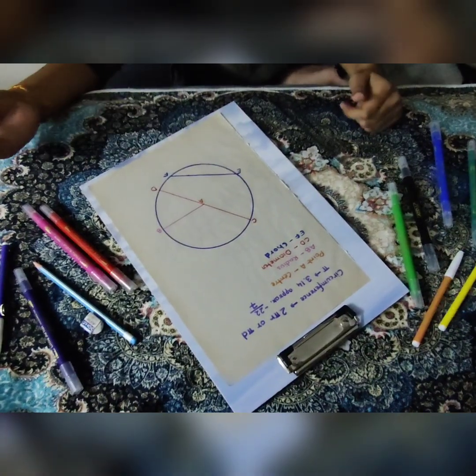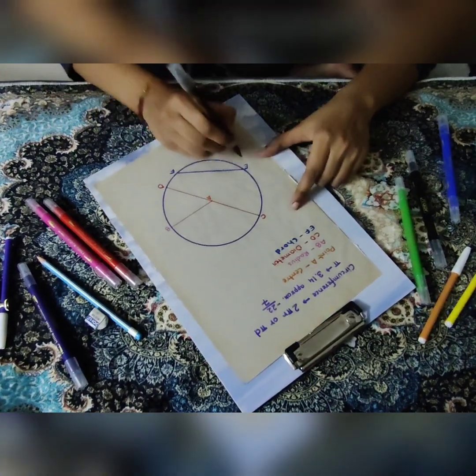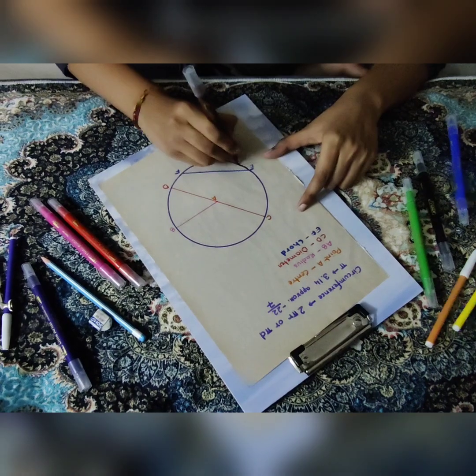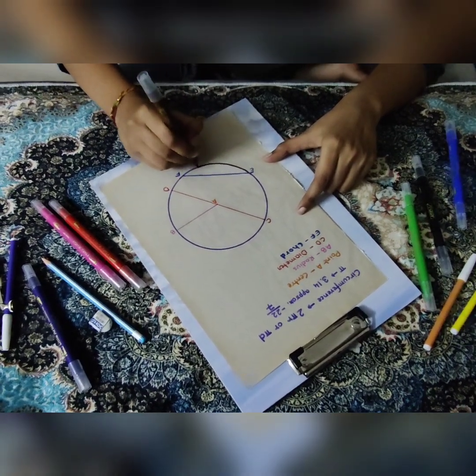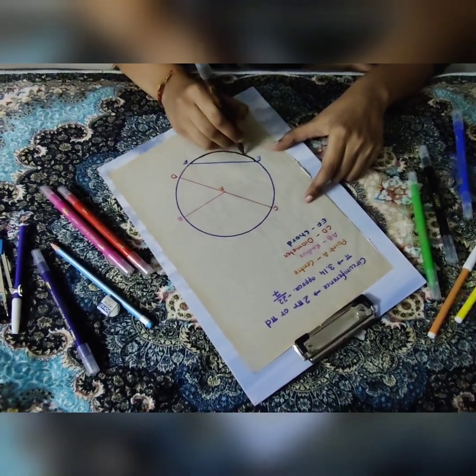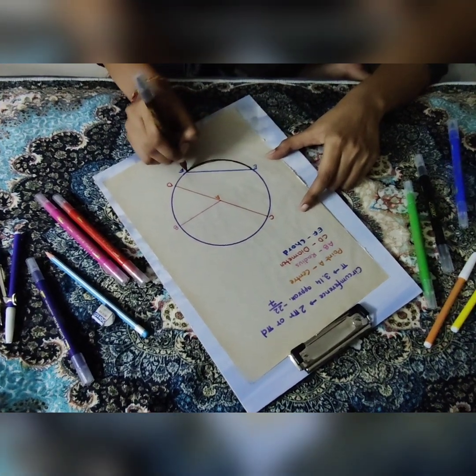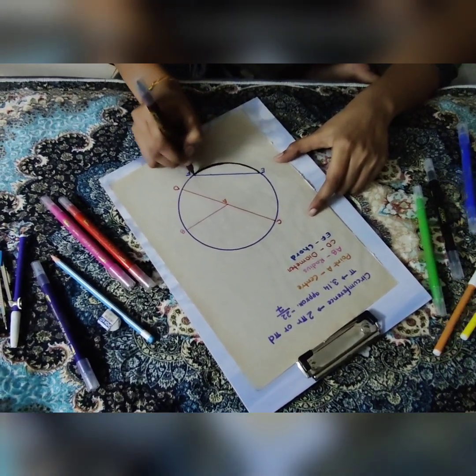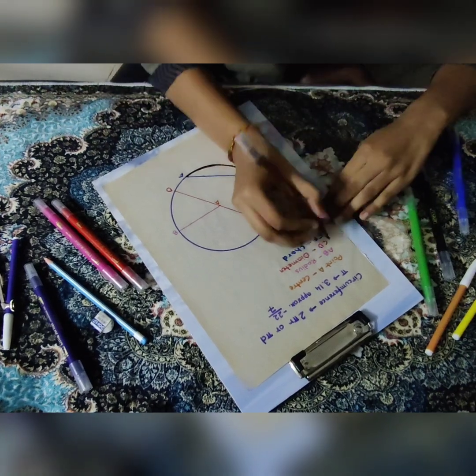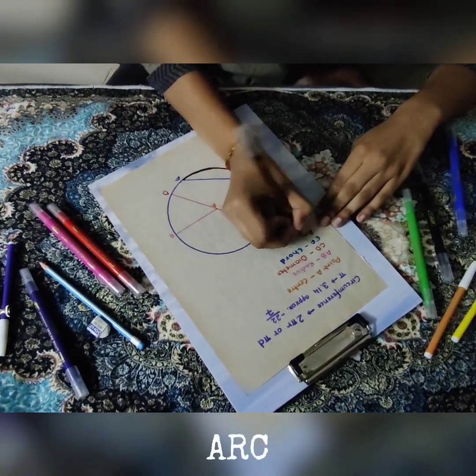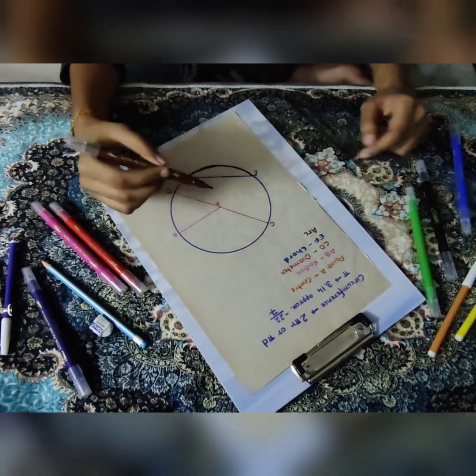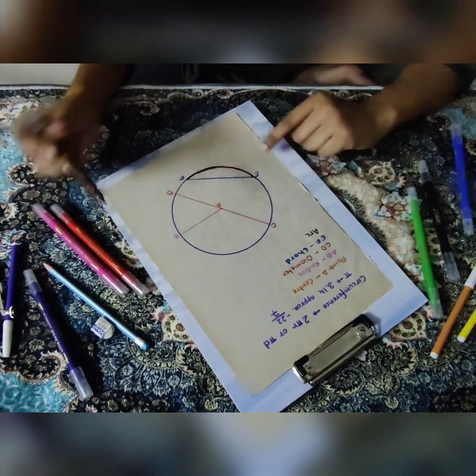Next part of the circle is our arc. So this area, this part that I have darkened with brown color, this is our arc. Now arc has also two parts, major arc and minor arc.